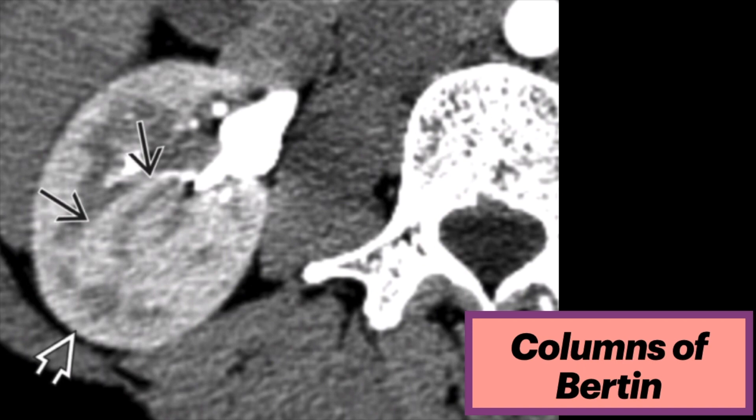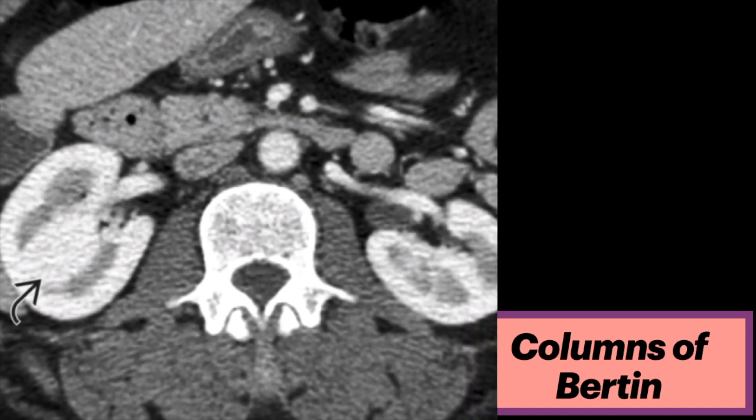This is how they appear on CT. They result from unresorbed polar parenchyma of one or both sub-kidneys' reniculi during embryogenesis.